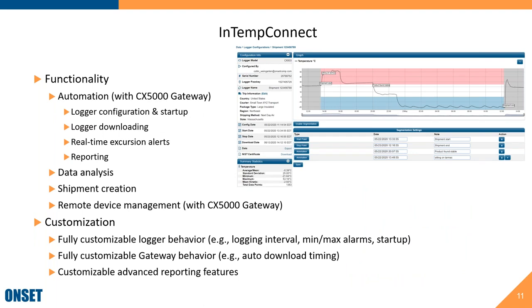The system offers a lot of automation. With the CX 5000 Gateway, it can automate logger configuration and startup, logger downloading, and provide real-time excursion alerts. As soon as a logger in range of a gateway experiences a temperature alarm, the gateway automatically downloads that logger, sends data to the cloud, and gives you an email and/or text notification. You can also automate reporting.